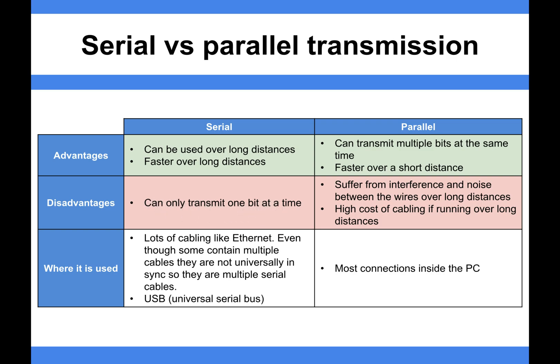A disadvantage of serial is that it can only transmit one bit at a time, so you're limited in how much you can transmit. Parallel can transmit multiple bits at the same time and is faster over short distances. Its disadvantages are that it suffers from interference and noise between wires over long distances — that's the data skew and crosstalk — and there's the high cost of cabling. Most connections within a PC are typically parallel, but when it leaves the PC, connections like Ethernet and USB are often serial, and the internet is largely serial transmission.